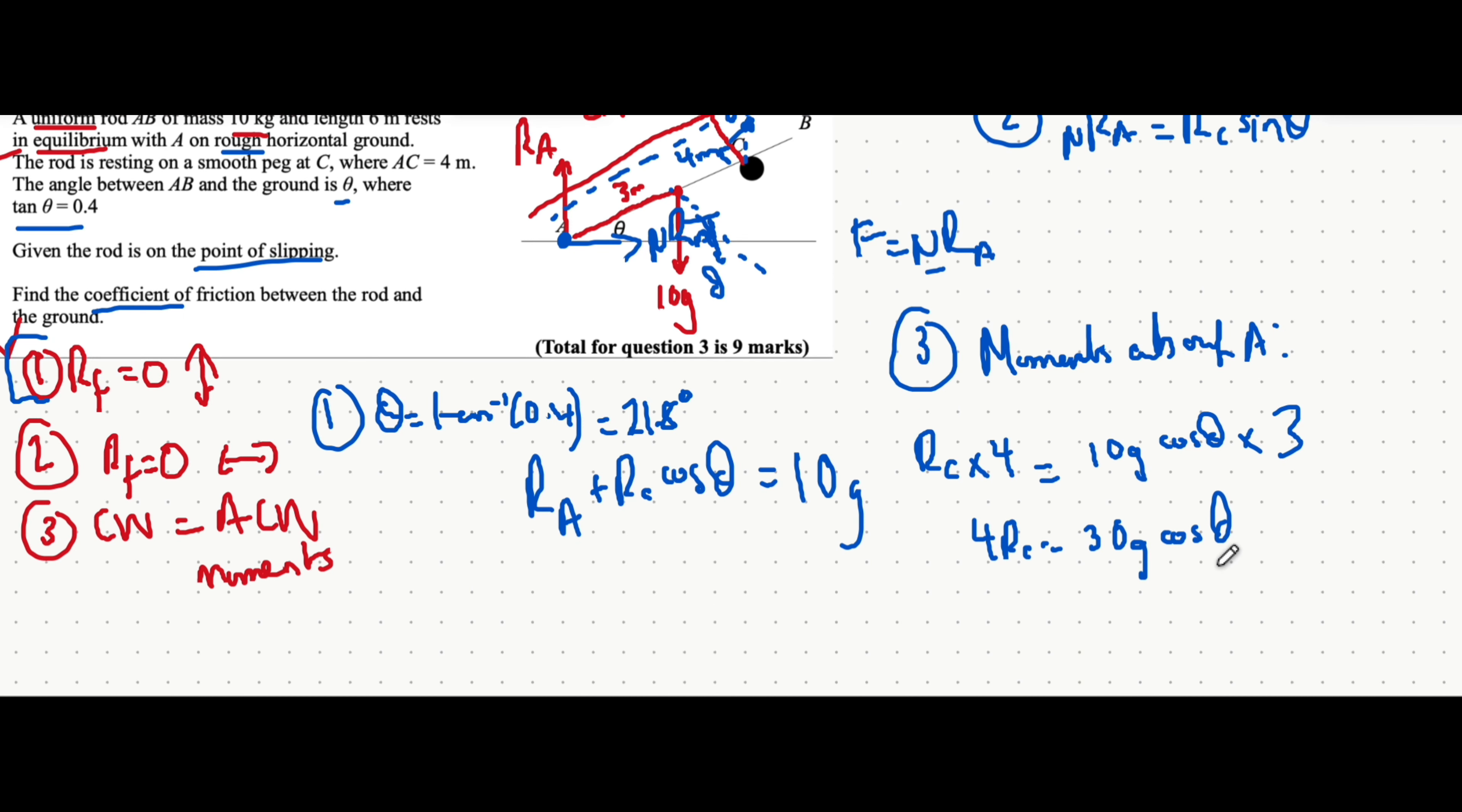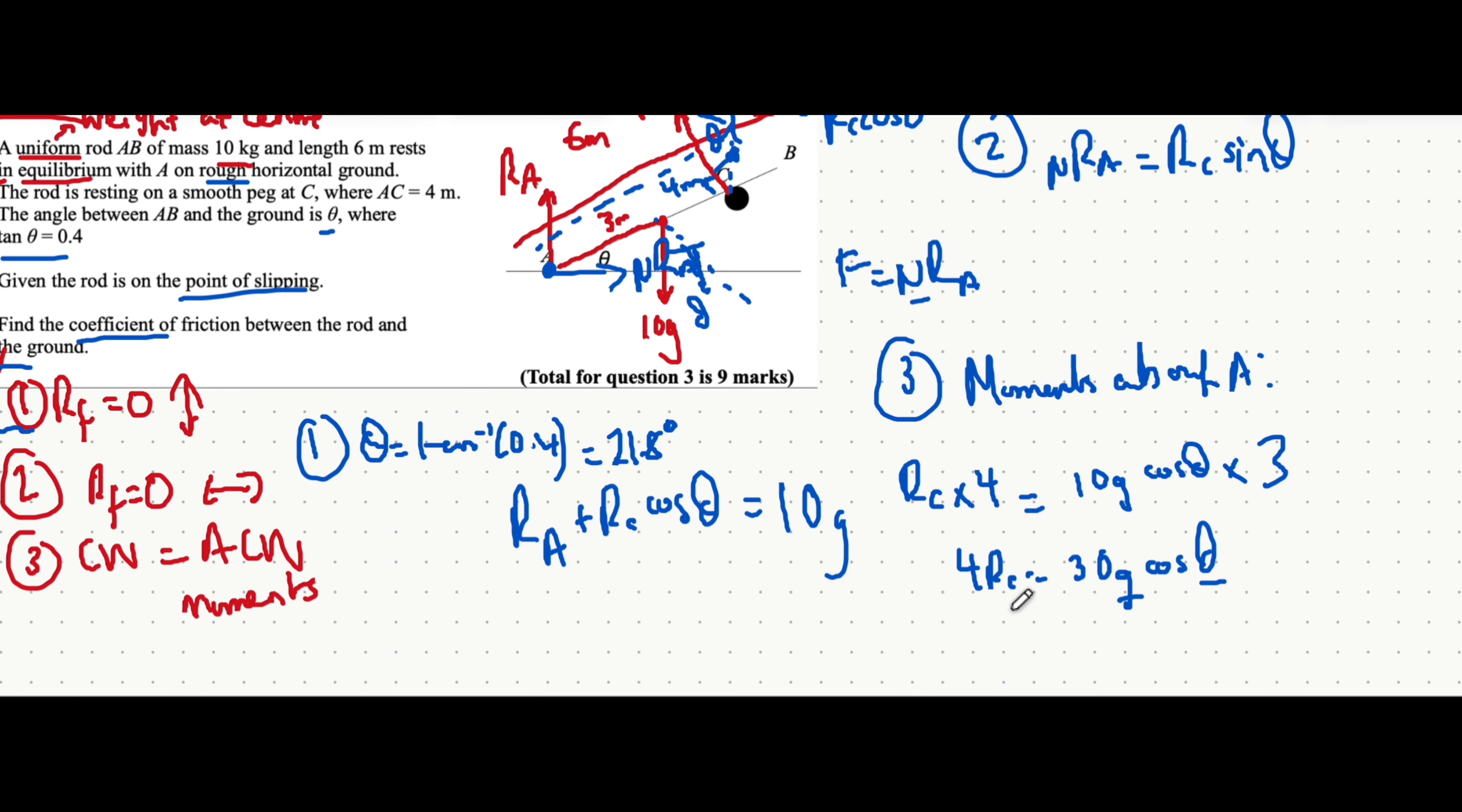So we can say 4R_C equals 30 G cos theta. Now we can actually calculate this because we know G is 9.8, we know theta is 21.8. So we can rearrange and calculate for R_C.